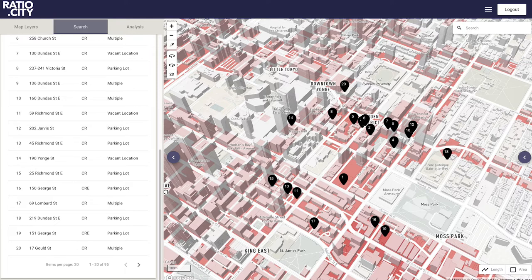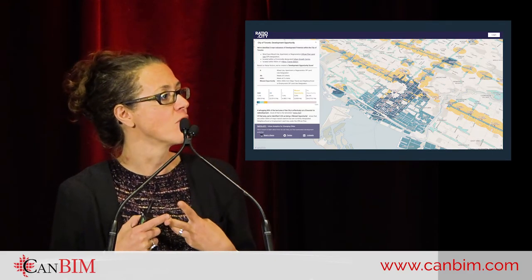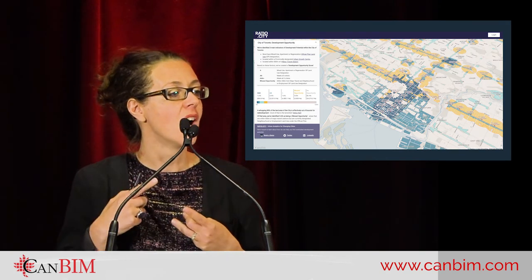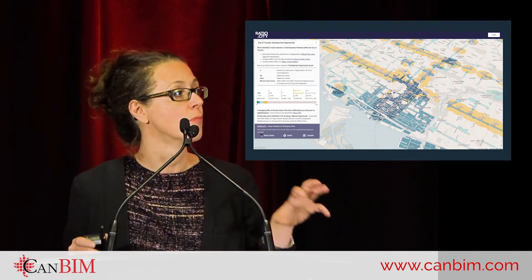When you think back about all those layers, if you had a mandate to find a student housing site close to a subway station with a two or three-story building on it and a minimum size of at least 15,000 square feet, we can now identify those opportunities across the entire city. We used all of this information to do a quick developability score, taking three main criteria: proximity to transit, an official plan designation of mixed-use, regeneration, or apartment, and location in one of those provincially mandated growth zones.